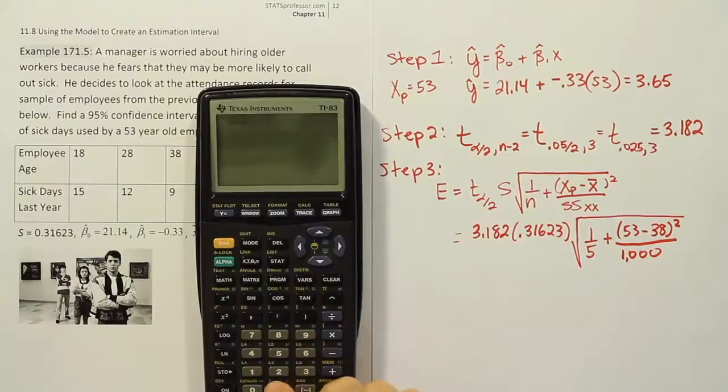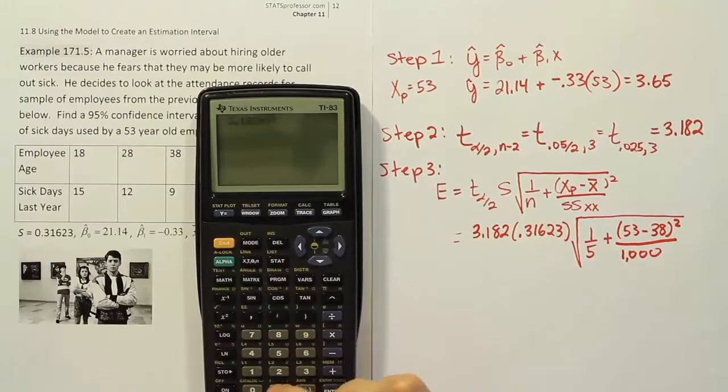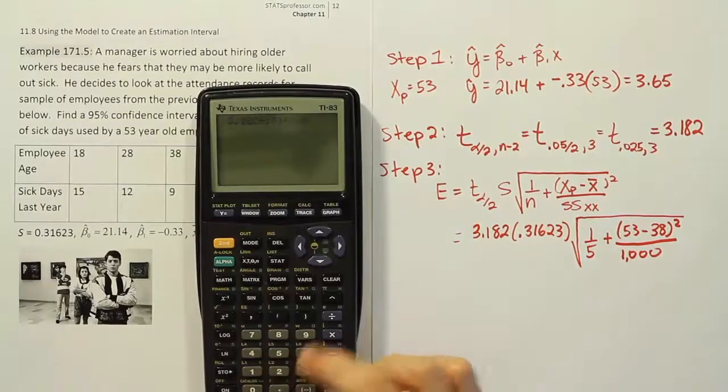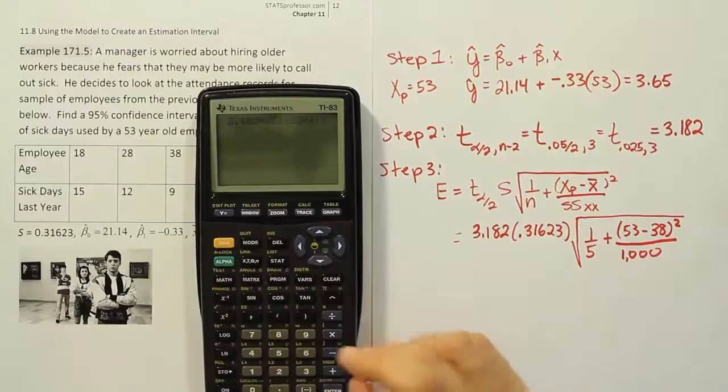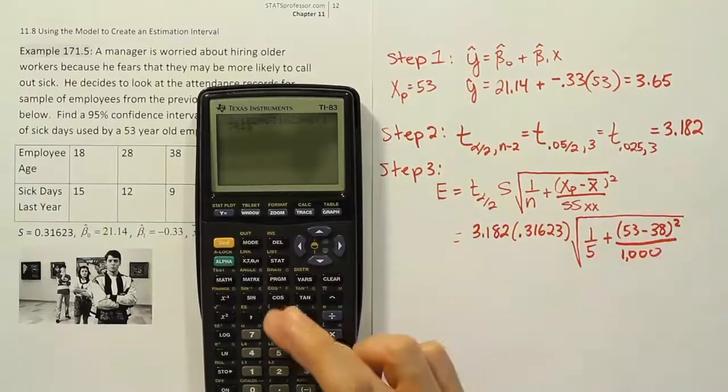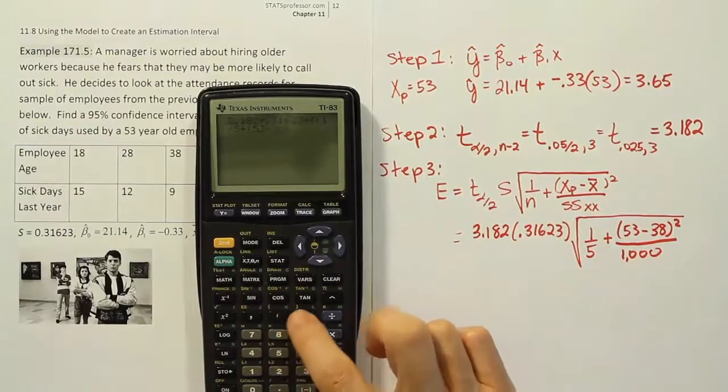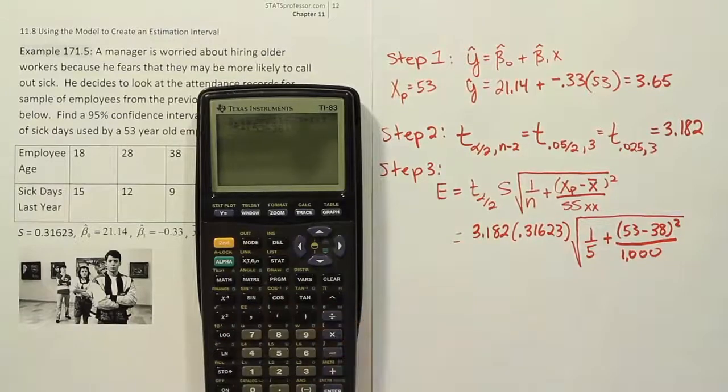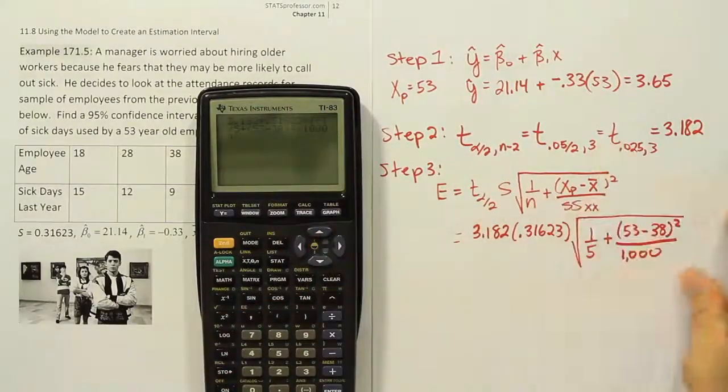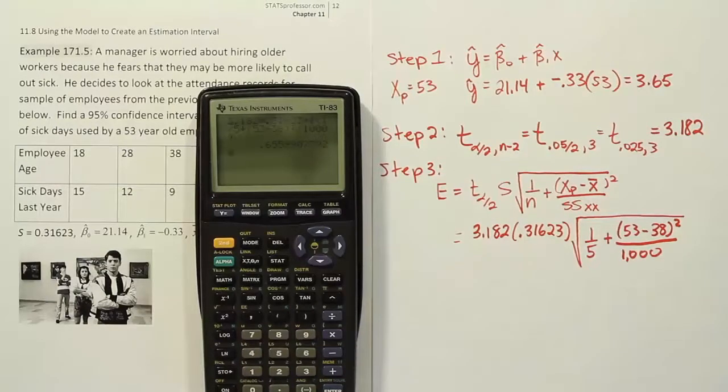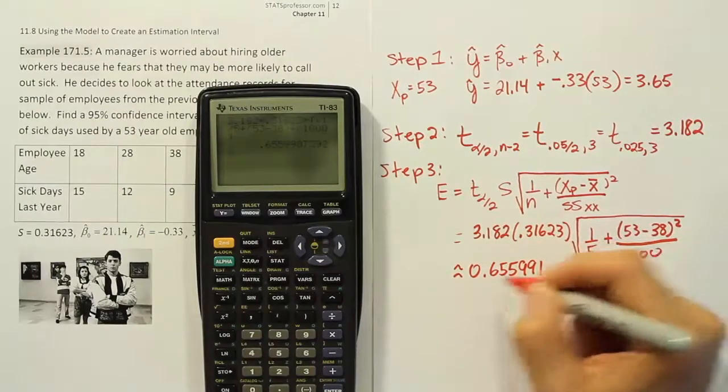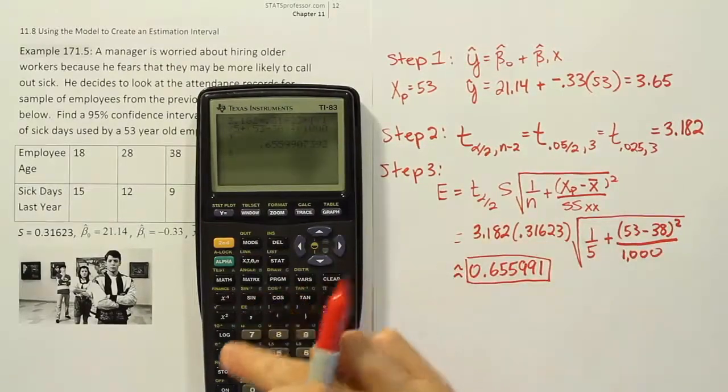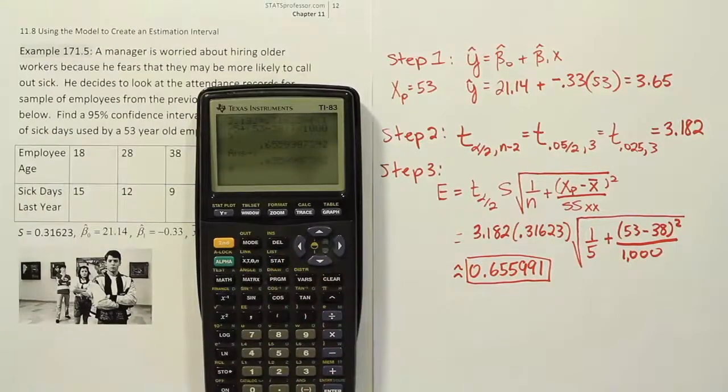The margin of error will be 3.182 times 0.31623 times the square root of, that's 1 fifth, 0.2, plus, I'm going to put the parentheses, 53 minus 38, close that parentheses and hit the square, and then divide by 1,000. Finally, I will close up that square root. This is why you need a calculator that allows you to see what you're working out. This is a lot to put in the calculator at once. When we're done, we have approximately 0.655991. I'm just going to store that in my calculator so I have it for later.